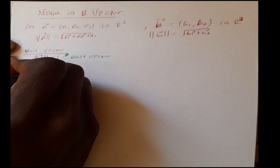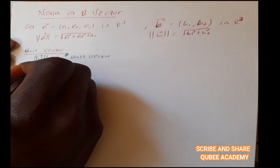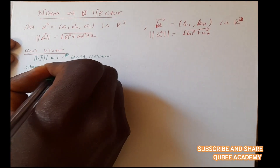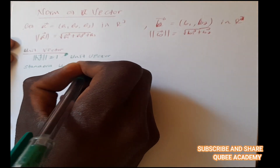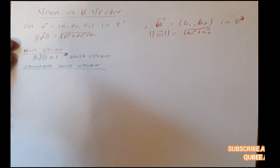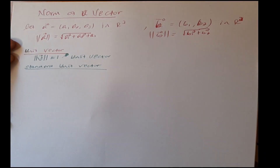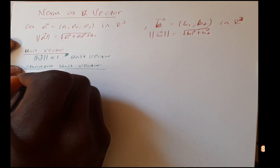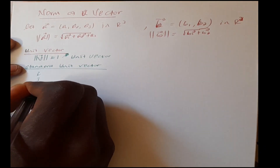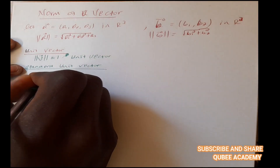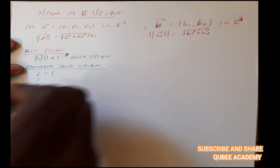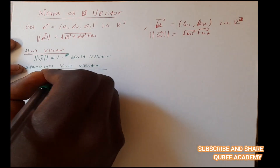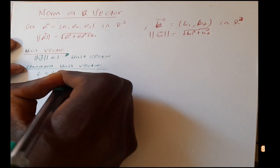A standard unit vector is a unit vector whose components are all zero except one component which is 1. For example, standard unit vectors are i, j, k. Each has one component equal to 1 and the rest zero.